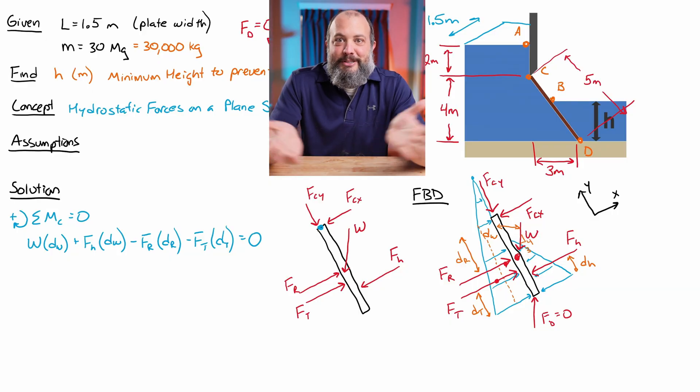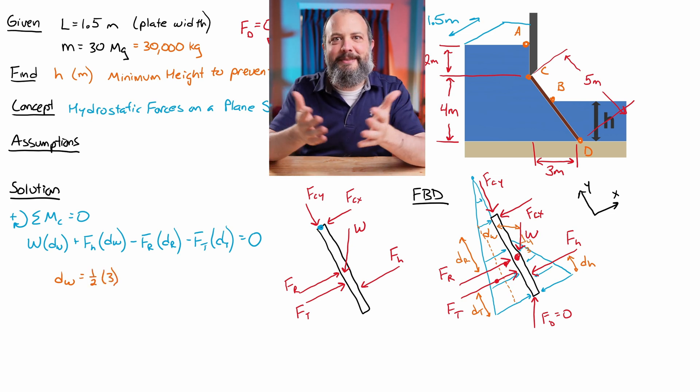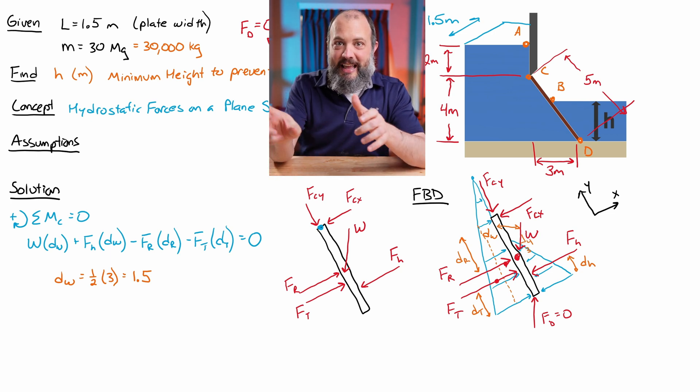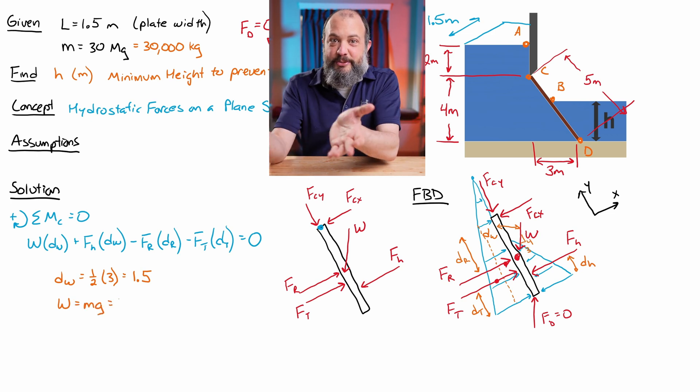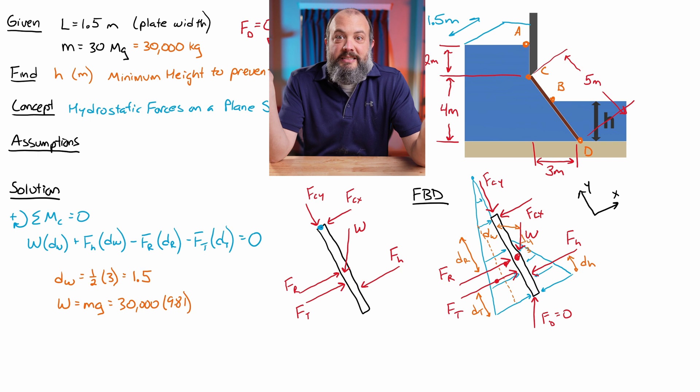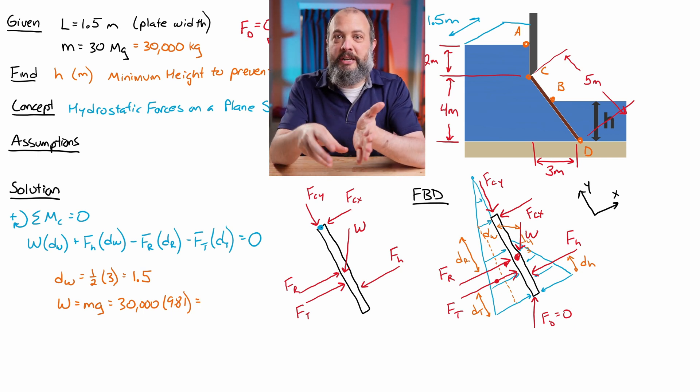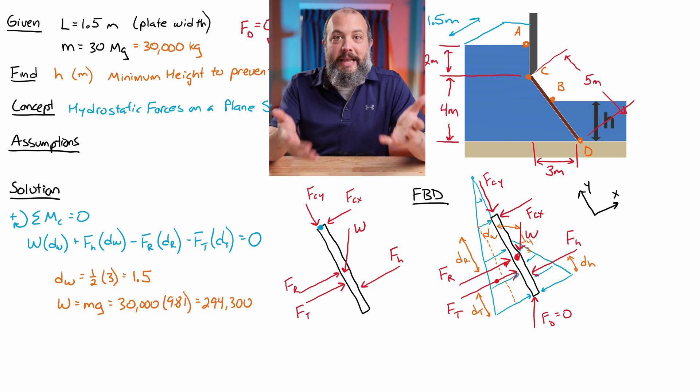So now we've got one equation and eight unknowns. Yay. So let's just make some progress. Pick anything we think we can find and just solve for it and just start plugging stuff in. DW looks easy enough. Since the weight vector is exactly in the middle of the gate, DW is just going to be half of that horizontal distance. So if the horizontal distance is three, DW is 1.5 meters. The weight itself, we were given a mass of 30,000 kilograms times gravity, which is 9.81 meters per second squared, not 32.2, which is for English units. And we get 294,000 newtons as the weight of this gate.